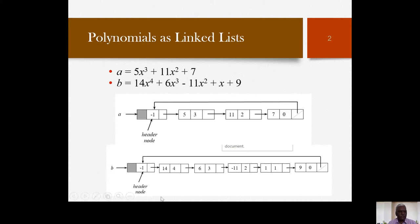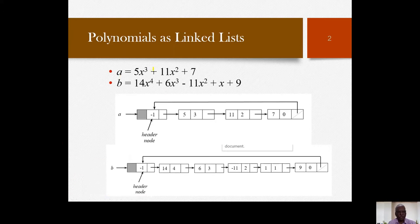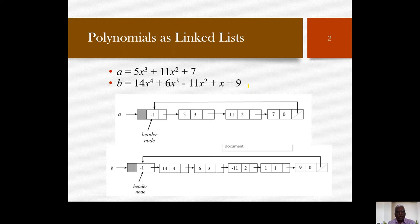Here you can see two polynomials are specified: polynomial A and polynomial B. Polynomial A has three terms, whereas polynomial B has five terms. This confirms that we do not know in advance how many terms will be in each polynomial, so we dynamically create nodes for the linked list and keep attaching them. We will also use a header node and a circular linked list.